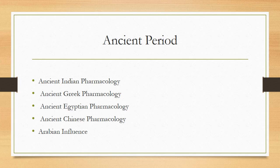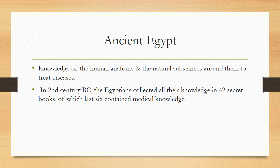The ancient period is divided into the following periods: ancient Indian pharmacology, ancient Greek pharmacology, ancient Egyptian pharmacology, ancient Chinese pharmacology, and finally the Arabian influence. In ancient Egyptian pharmacology, knowledge of human anatomy and natural substances was used to treat disease.